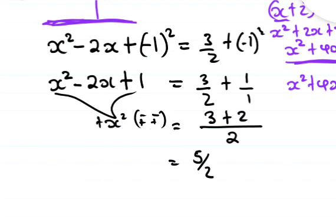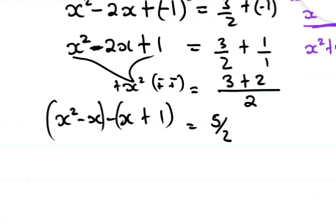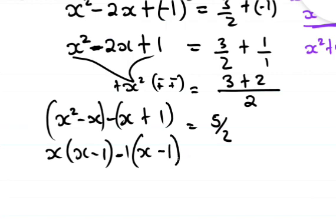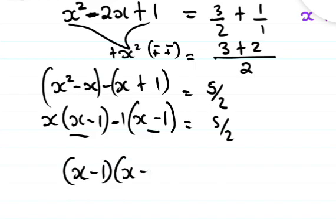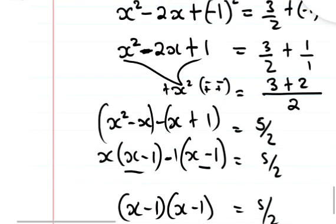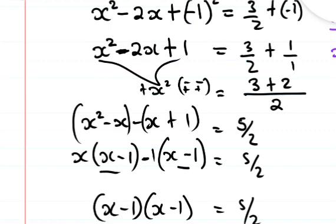We factorize the left hand side. We have negative 1 x squared minus x, which is negative 1x minus x. The common factor in the first bracket is x, giving us negative x minus 1, and we have negative x, negative 1, and positive 1. So x minus 1, x minus 1, giving us 5 over 2 on the right.